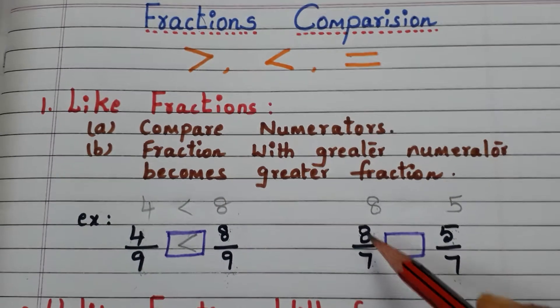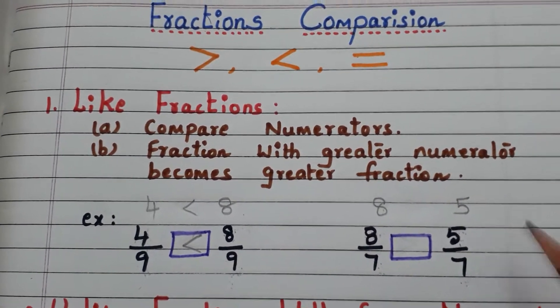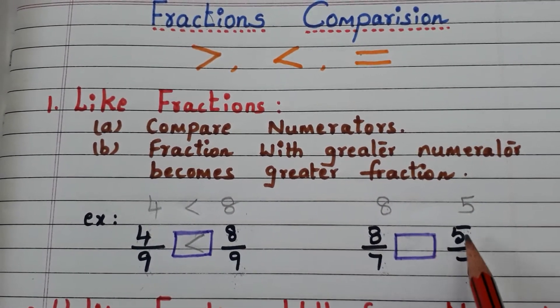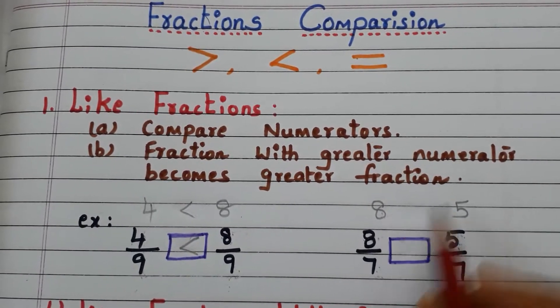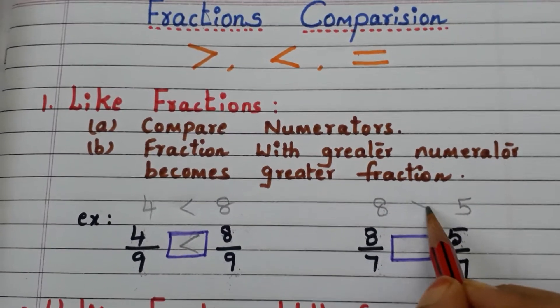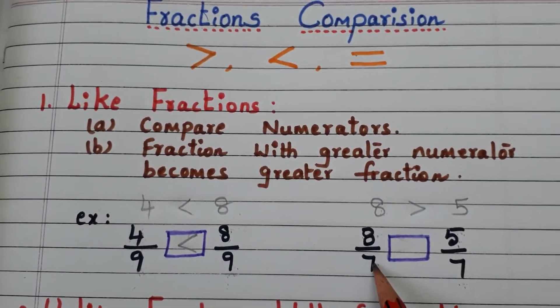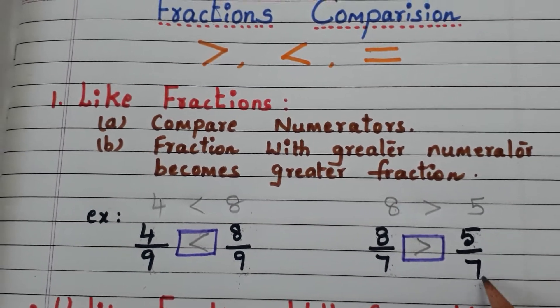Let us go to another example: 8 by 7 and 5 by 7. Compare the numerators 8 and 5 — here 8 is greater than 5. So 8 by 7 is greater than 5 by 7.